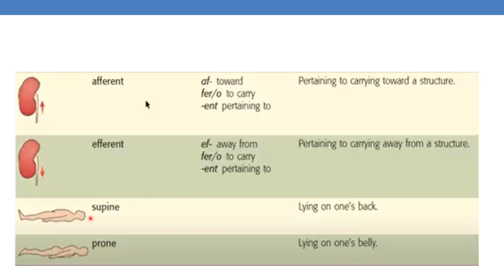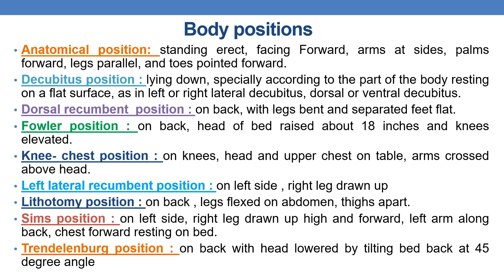Supine means lying on one's back. Prone means lying on one's belly. Coming to body positions — this is the final topic in this session. Anatomical position is standing erect, facing forward, arms at sides, palms forward, legs parallel and toes pointed forward.